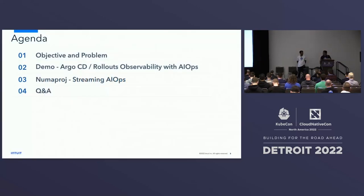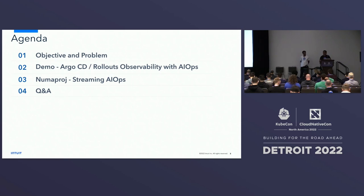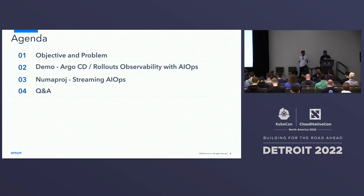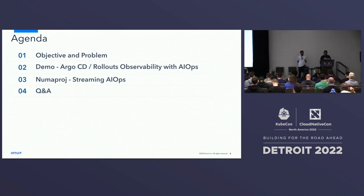Here's the agenda for today. We will talk about a specific problem — change-induced incidents — and how we resolve it using AIOps. We have a demo both for Argo CD and Argo Rollouts, and then we will talk about Muma Proj, which is our open source AIOps project and how that's powering all this. And if time permits, we will do some questions.